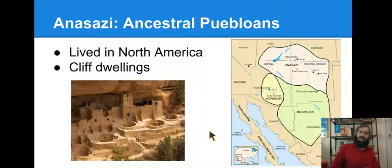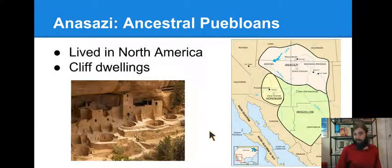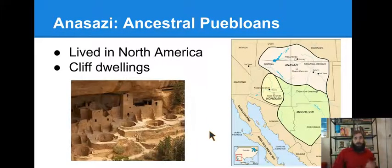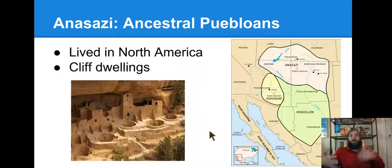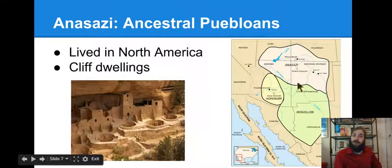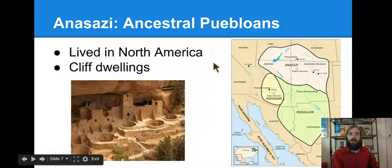The Anasazi — we haven't talked about them much. The name Anasazi is actually considered somewhat offensive; they prefer to be called the Ancestral Puebloans, so that's what I'll call them. They lived in North America in what's called the Four Corners Region, where Utah, Colorado, New Mexico, and Arizona all meet. They had cliff dwellings — sometimes the only way to reach them was by rope, so if enemies attacked, you just pulled up the rope. Pretty awesome defense.